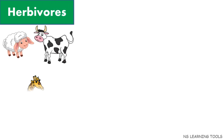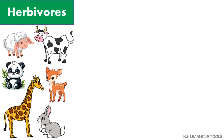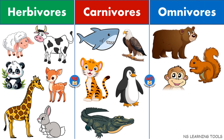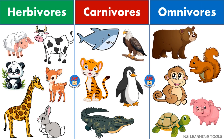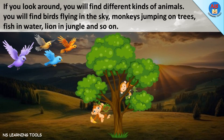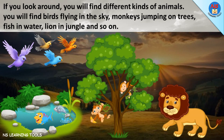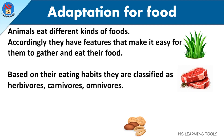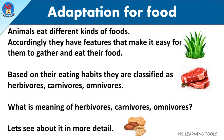Hello friends! In this video we will learn about herbivores animals, carnivores animals, and omnivores animals. If you look around you will find different kinds of animals — birds flying in the sky, monkeys jumping on trees, fish in water, lions in the jungle, and so on. Animals eat different kinds of foods, and based on their eating habits they are classified as herbivores, carnivores, or omnivores.